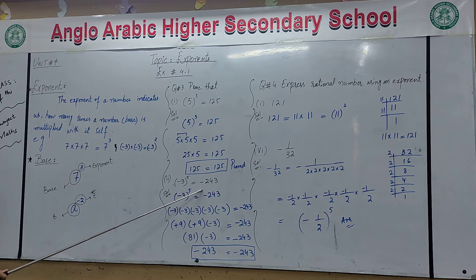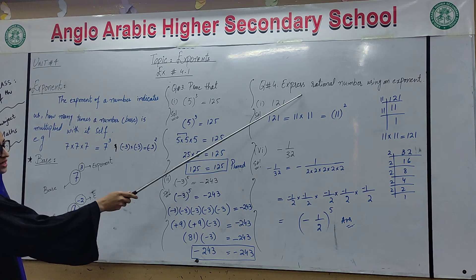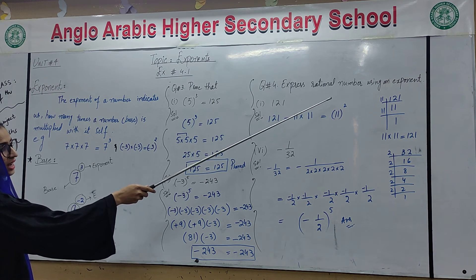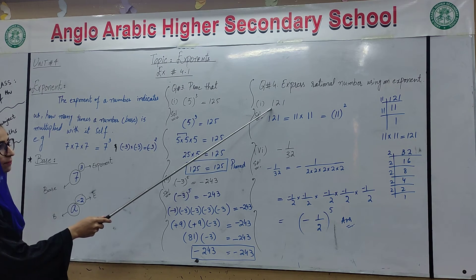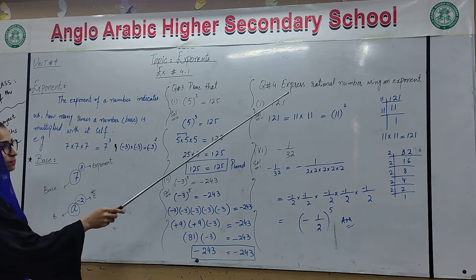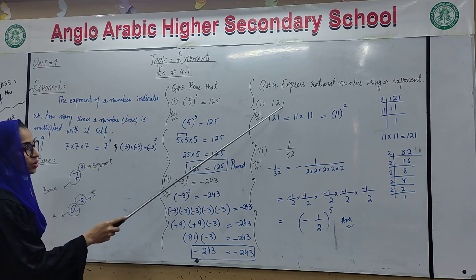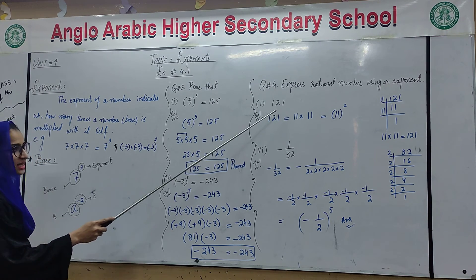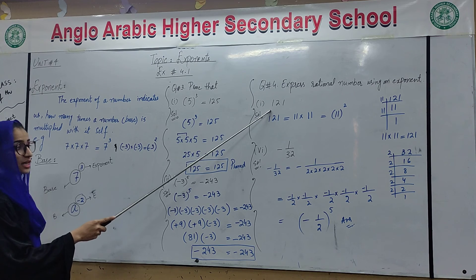Next, question number four: express rational numbers using exponents. We have rational numbers, for example 121. You need to express this using an exponent. First we will see what to do.